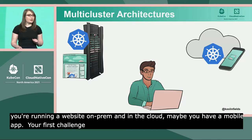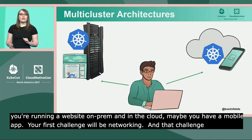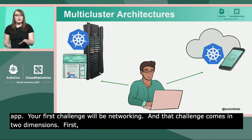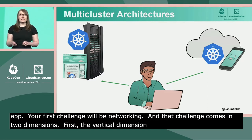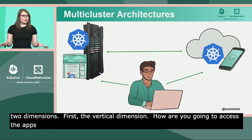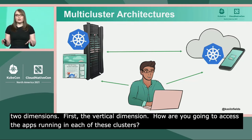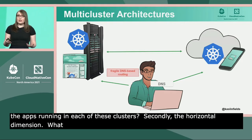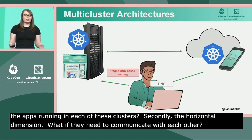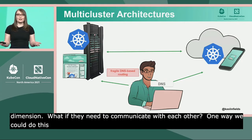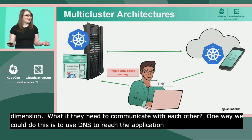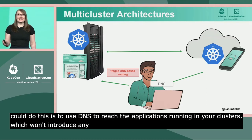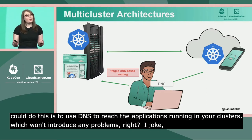That challenge comes in two dimensions. First, the vertical dimension: how are you or your users going to access the apps running in each of these separate clusters? Secondly, the horizontal dimension: what if your clusters are running applications that need to communicate with each other? One way we could do this is to use DNS to reach the applications running in your clusters — which won't introduce any problems, right? I joke, but really, DNS is a fragile tool that causes a lot of problems, as we've seen.